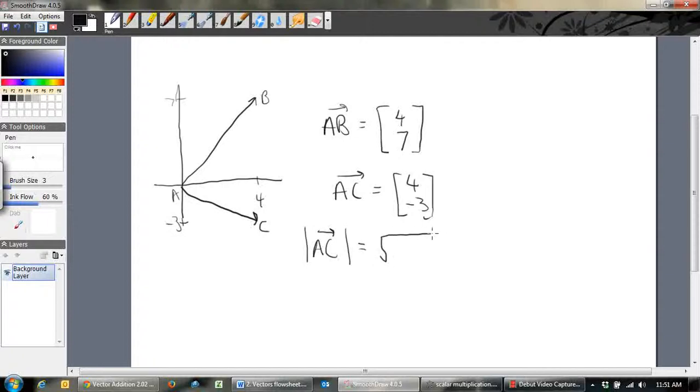And so what is it? The length of that line will be the square root of the horizontal component. So that'll be 4. And Pythagoras says squared, plus the vertical component. So plus 3 squared. And of course, we know that's 16 plus 9, square root of 25, which is 5. So the magnitude of this line here is 5. Similarly, for AB, if we wanted to do the magnitude of AB, it would be equal to, what would it be? It would be the square root of 4 squared plus 7 squared. And that'll give you the length of the line. So that's 16 plus 49. So what's that? 55, 65, square root of 65.